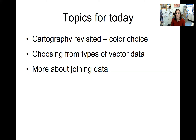Geoprocessing is essentially taking vector data and creating new shapes of vector data, rather than selections, which involve selecting from existing sets of vector points, lines, and polygons.